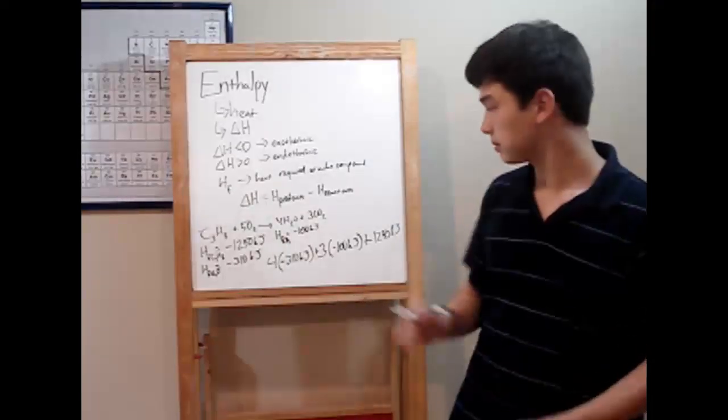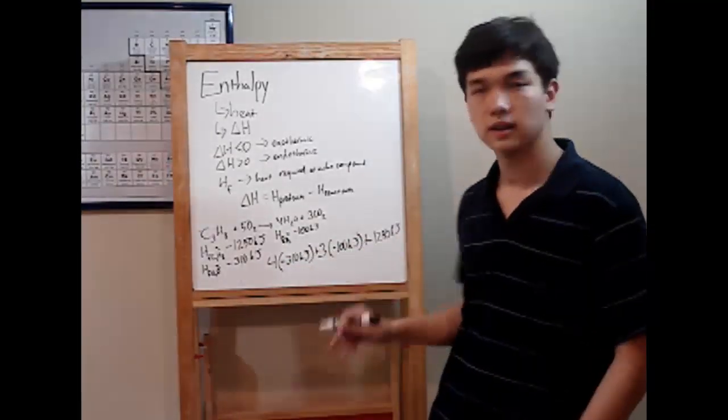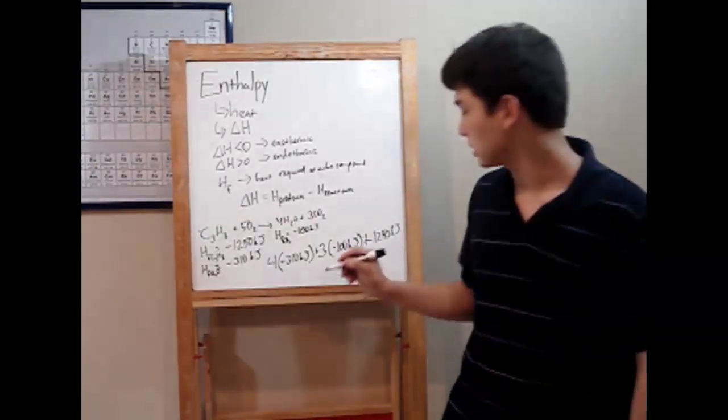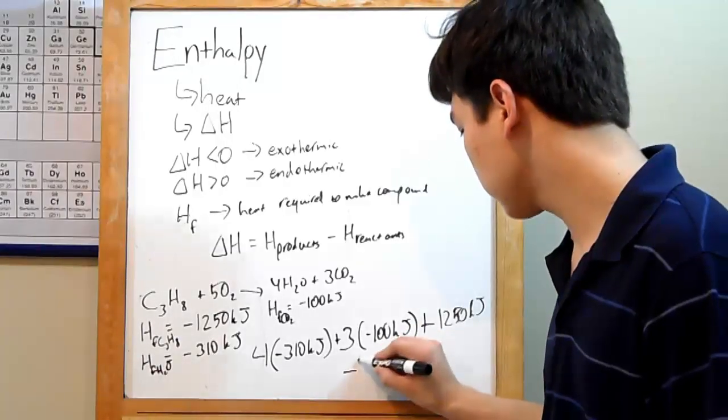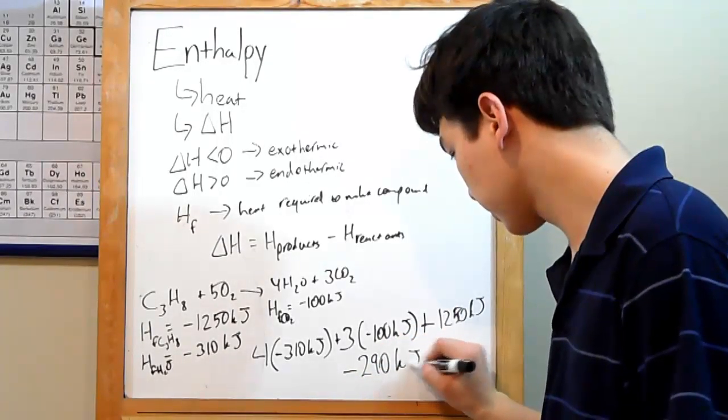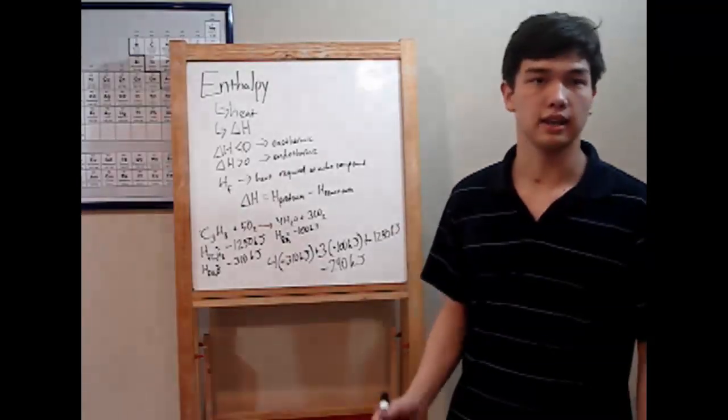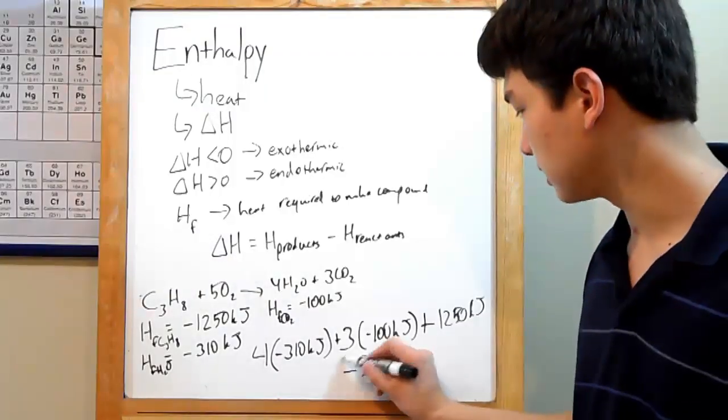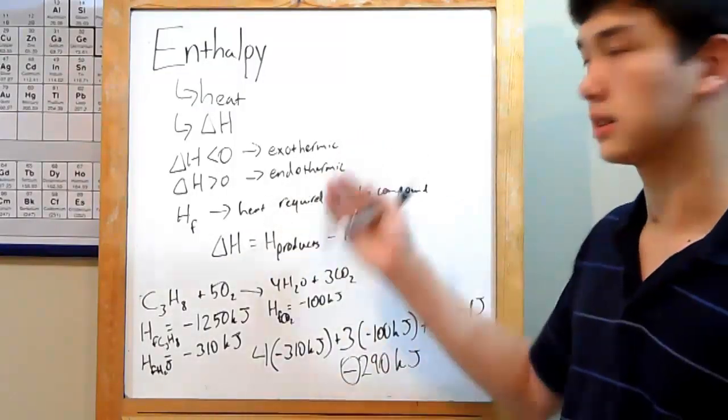And so all you have to do, do this multiplication here, and then add it all together. What you get is negative 290 kJ in total. So now we have our delta H. And we can tell that since this is negative, we have an exothermic reaction.